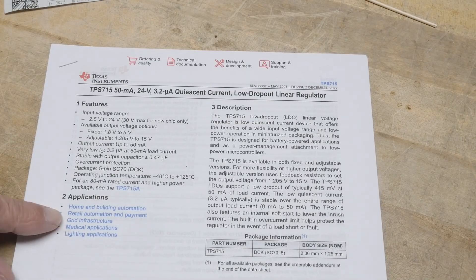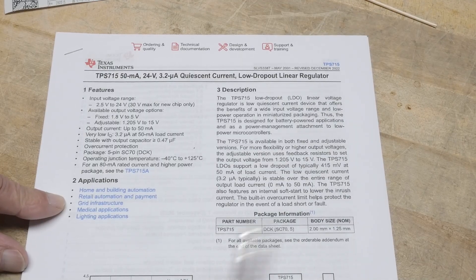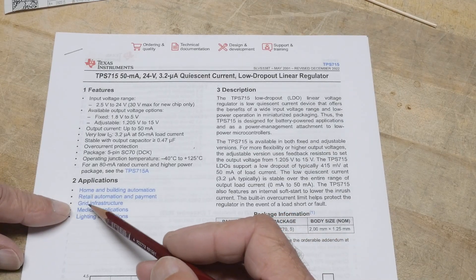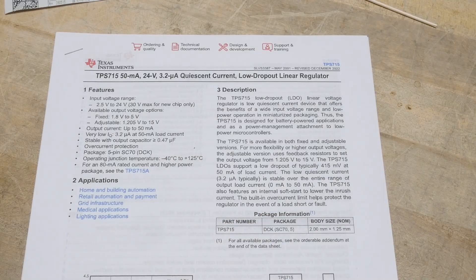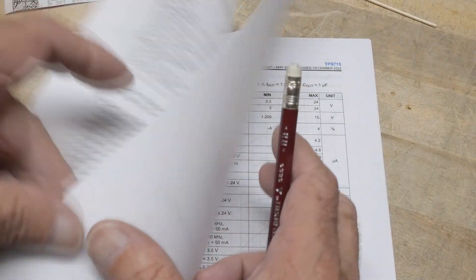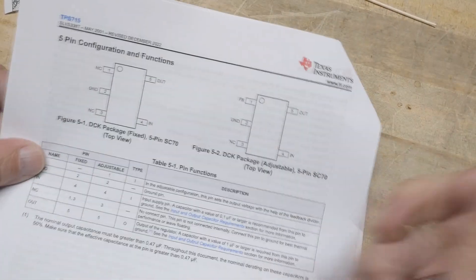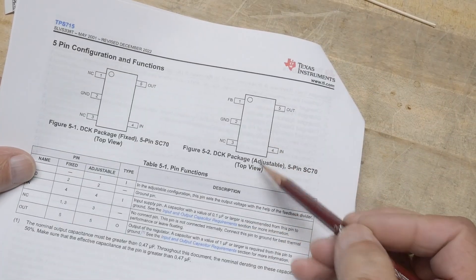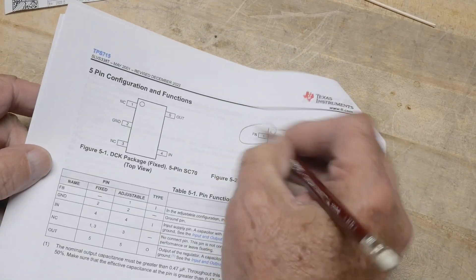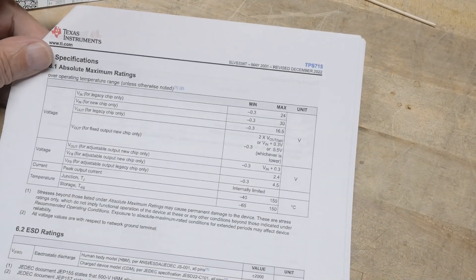Yeah. You can use, I always love these applications. You basically use this thing for anything, right? But they have to put in some. So they say, oh, grid infrastructure or medical applications, whatever. Let's see here. Let's take a look at what's going on here. So this is the little, here's the cool little package here, the SC70. This is the adjustable version. So the adjustable version uses pin one and the fixed versions just have a no connect there. All right.